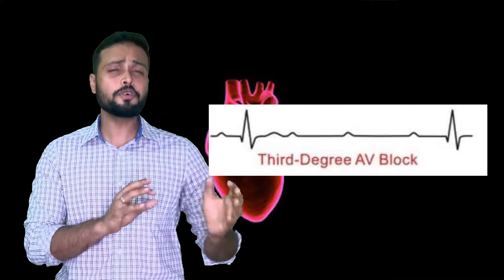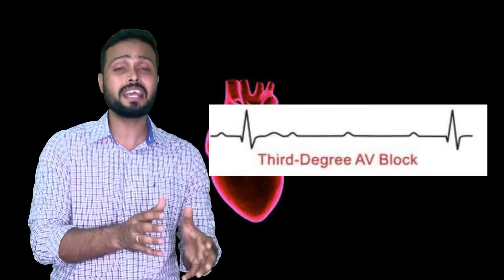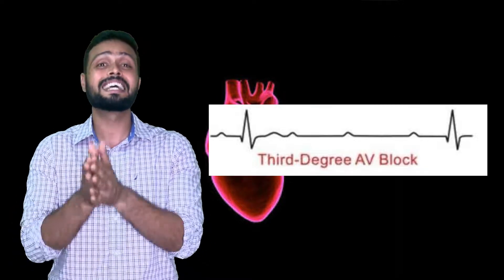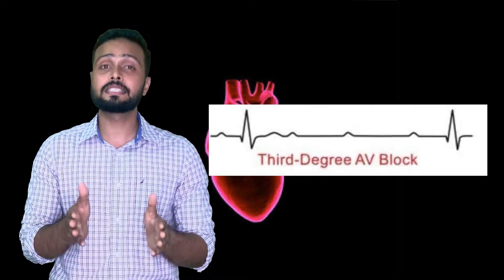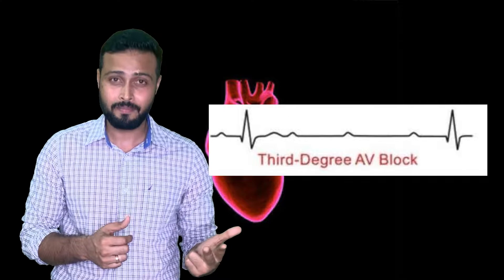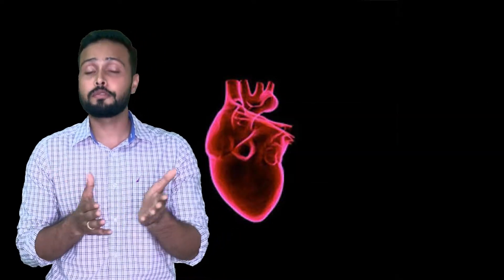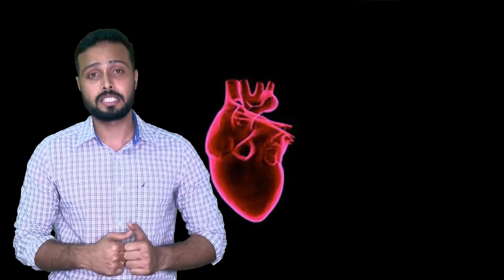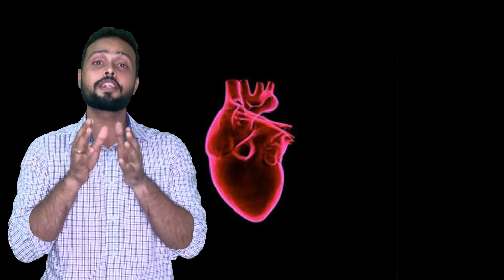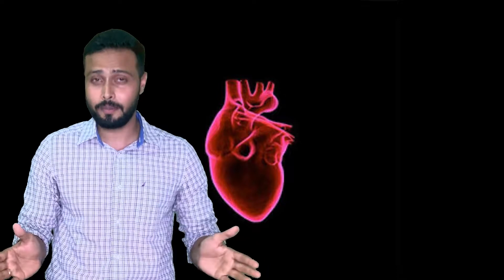If you find no relationship between the P wave and the QRS complex, that is considered a third degree heart block, which can be a medical emergency for the patient. Now let's discuss what happens to the ECG when a person is exercising, and what is considered normal.